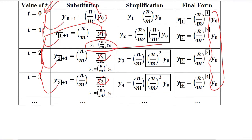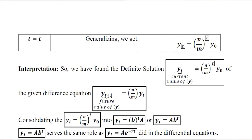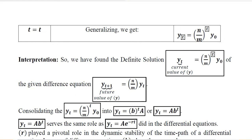The pattern is simply that we have t in the subscript, the ratio of the coefficients raised to the power t, and then the initial condition. We have developed the same solution using the iterative method. This is not the final result because this is the solution of the homogeneous case.